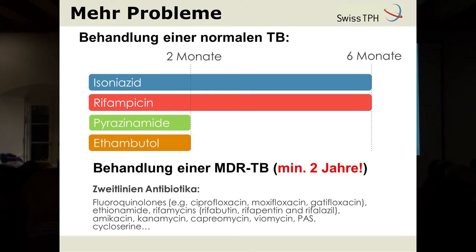Ein weiteres Problem ist, dass die Behandlung sehr lange dauert: sechs Monate mit einem Cocktail von mindestens vier Antibiotika. Das heißt, die Patienten müssen einen Haufen Pillen schlucken während einer langen Zeit, jeden Tag. Die Bakterien können Resistenzen entwickeln gegenüber diesen Medikamenten – dann spricht man von multiresistenten Bakterien. Es gibt zum Glück die sogenannten Zweitlinien-Antibiotika, aber die sind nicht so effizient, darum muss man bis zu zwei Jahre lang behandeln. Leider gibt es auch da wieder Resistenzen. Da spricht man dann von XDR – Extensively Drug-Resistant Tuberculosis.